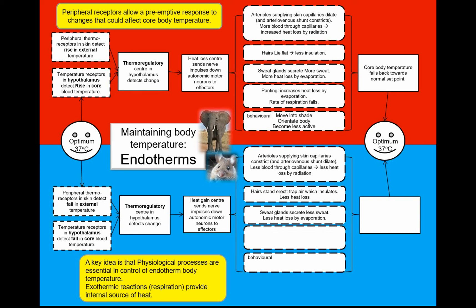Another key physiological response is what is called shivering — your voluntary skeletal muscles contract involuntarily, driven by nerve impulses from your autonomic nervous system. You can't control this. Because those muscles are working more, there are more exothermic reactions — more respiration — so more heat is released. Your basal metabolic rate also goes up, so your basal rate of respiration will be higher when the environment is colder.